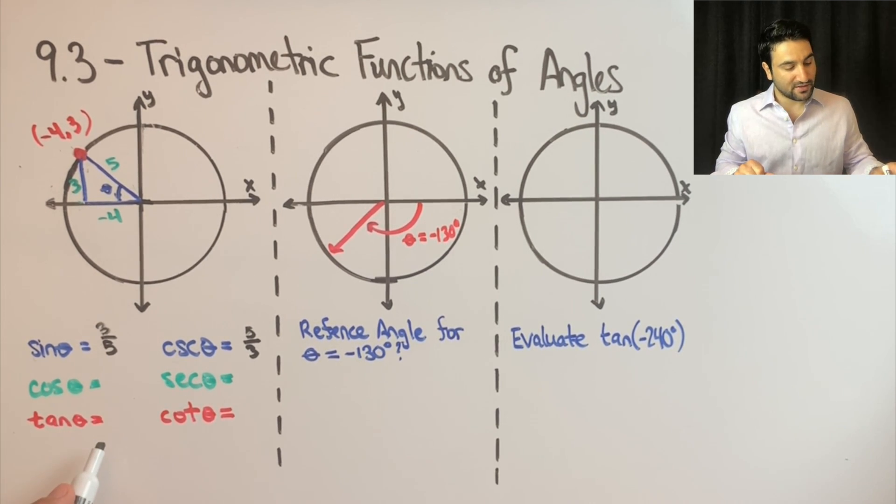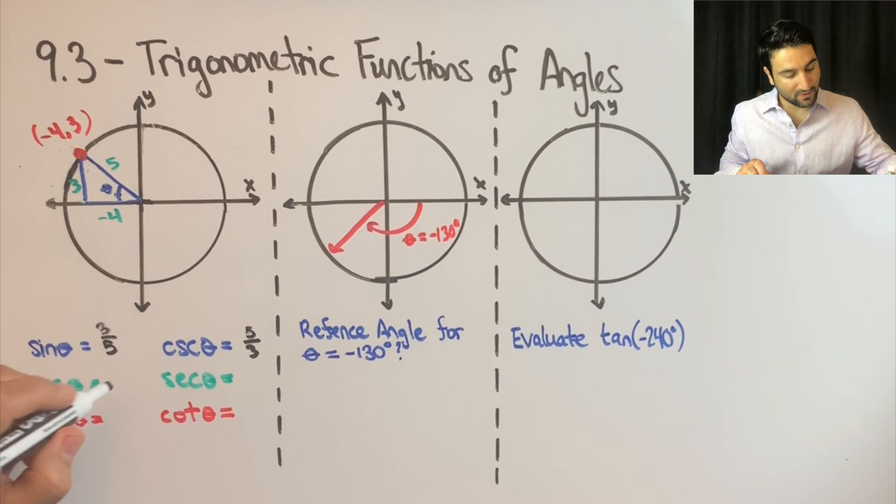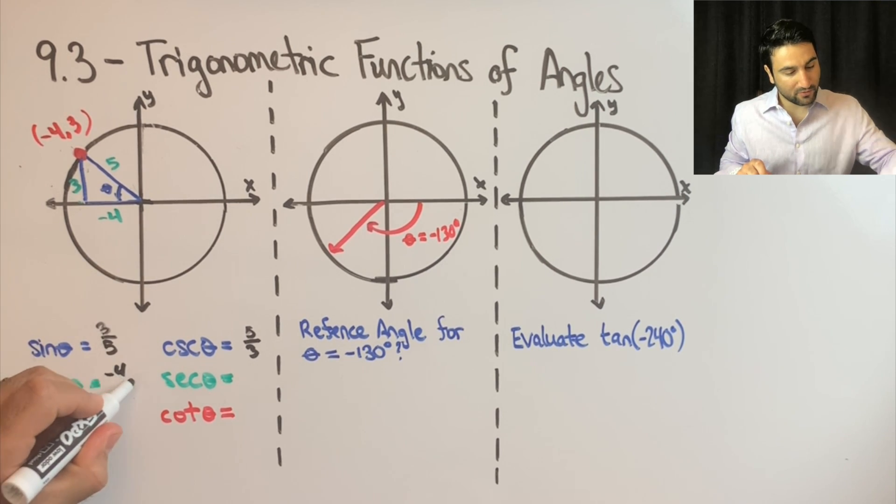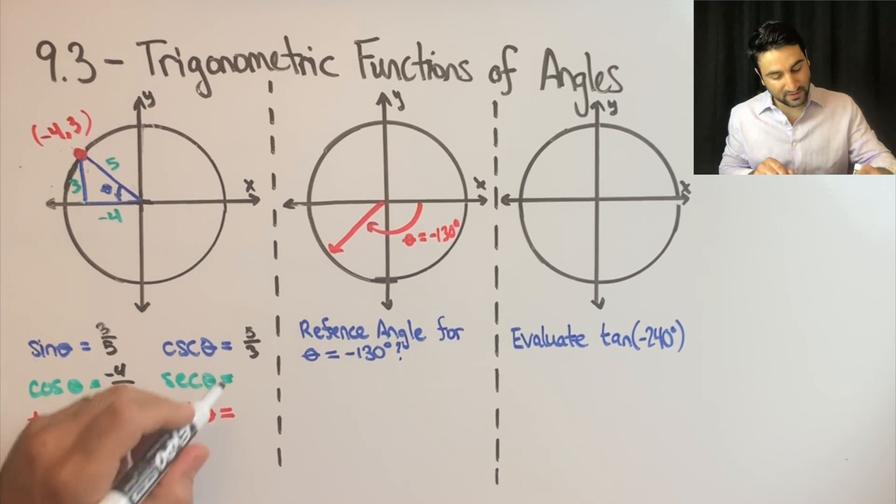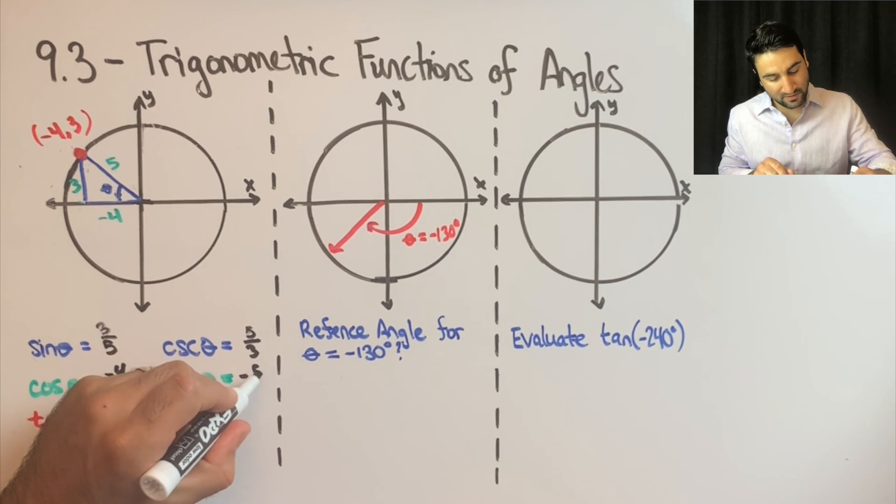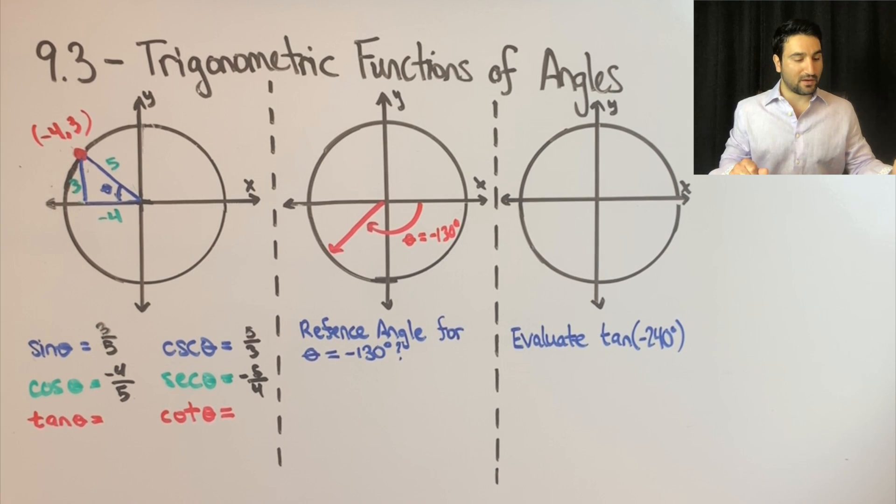Now let's complete the rest. So cosine of theta is from SOHCAHTOA, so adjacent over hypotenuse. So adjacent is negative 4 over hypotenuse is 5. And secant is the reciprocal of that, which is negative 5 fourths.